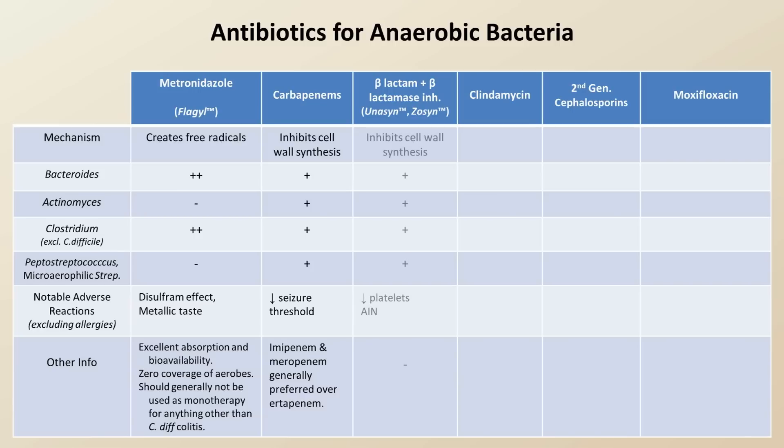Combinations of a beta-lactam and beta-lactamase inhibitor, as with unasyn and zosyn, also inhibit cell wall synthesis and are also active against just about all anaerobes. They are associated with a relatively large number of minor side effects, but some notable ones are thrombocytopenia and acute interstitial nephritis, which can rarely cause kidney failure.